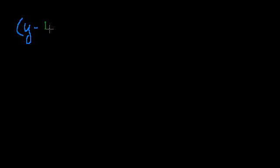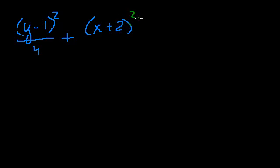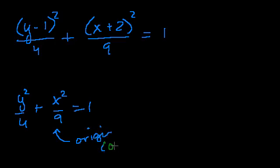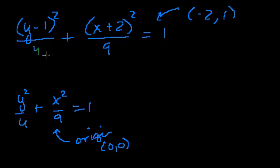To wrap up, let's graph: (y − 1)² over 4 plus (x + 2)² over 9 equals 1. This is just like y²/4 + x²/9 = 1, but shifted. The center is at (−2, 1). The y radius is 2 (since 2² = 4) and the x radius is 3 (since 3² = 9).